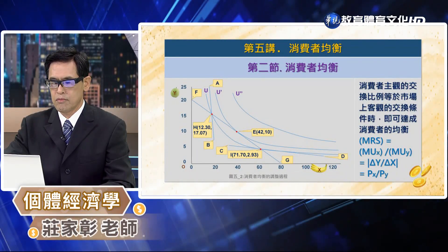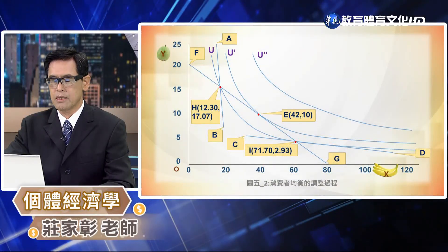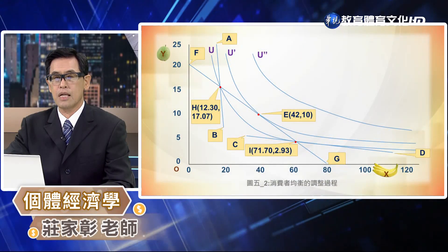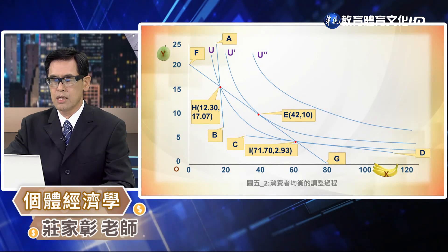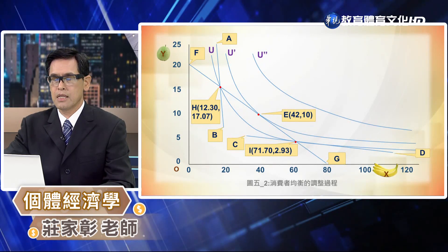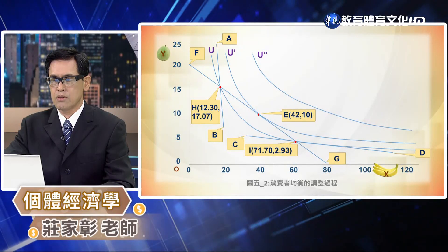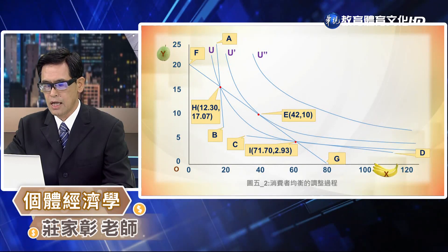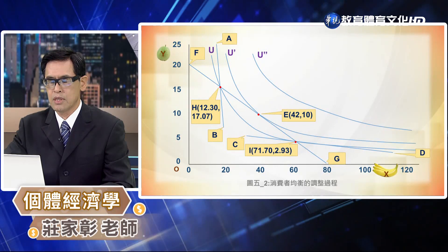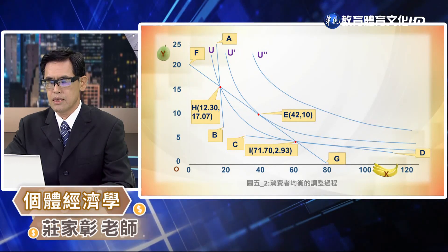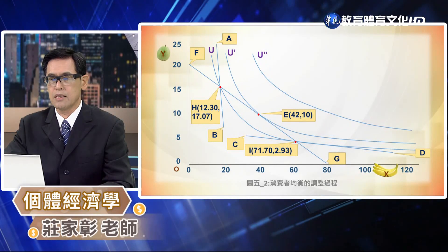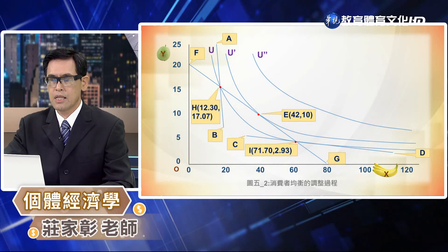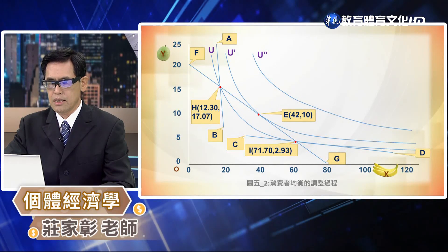這個條件就是邊際均衡的條件，在這個條件之下我們就可以達成消費者的均衡消費行為，如圖5-2。在圖5-2上面我們可以看到三條無異曲線 U1、U' 跟 U''。這三條無異曲線上面有三條直線，我們的預算線是 FG 這條直線，它跟 U' 相切於 E 點，E 點的坐標是 (42, 10)，代表這個是消費者的最適消費組合點，另外有兩個點 H 點跟 I 點。